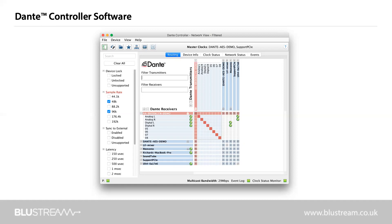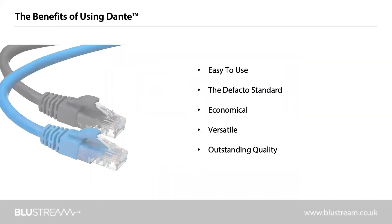The Dante Controller software is free to download for Windows or Mac OS from the Audinate website at audinate.com. But what are the benefits of using Dante? Firstly, it's easy to use. Signal routing and system configuration with Dante is both simple and flexible. The Dante Controller software will automatically discover each and every device on the network, enabling you to instantly route audio, label devices and configure the network, all with a few simple mouse clicks.